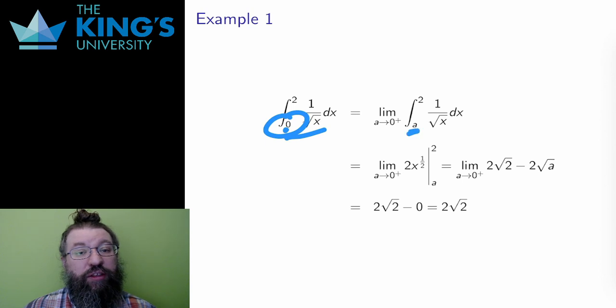So instead of integrating all the way to 0 where the problem is, I integrate from a to 2 where a is some small positive number, and then I take the limit as a approaches 0 from the positive side. This integral I can do. This is just inverse power rule, and the antiderivative is 2 root x.